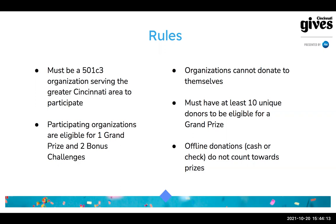You must have 10 unique donors to be eligible for a grand prize, which basically ensures that someone can't plant one major gift and win. Offline donations are not eligible for prizes — they can be entered on your profile to reflect the totality of your fundraising, but because they don't count toward prizes, you want to do everything you can to make sure your donors understand they should give online if at all possible.